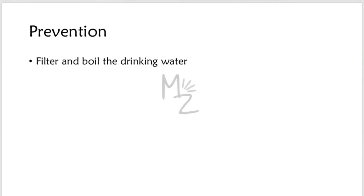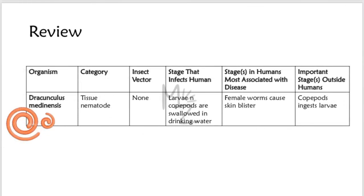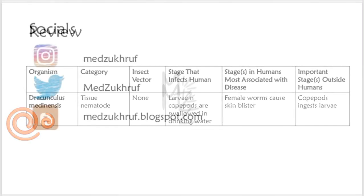Prevention consists of filtering or boiling drinking water. To review: the organism is Dracunculus medinensis, common name Guinea fire worm, responsible for causing dracunculosis. Mode of transmission is ingestion of copepods — small crustaceans — in drinking water. Definitive hosts are human beings; intermediate hosts are copepods. Endemic areas are tropical Africa and Asia. Primary location is the cutaneous tissue. Diagnosis is mainly clinical; treatment is gradual extraction of the worm. Category is tissue nematode with no insect vector. The infective stage is L3 larvae in copepods swallowed in drinking water. The stage most associated with disease is female worms causing skin blisters. An important stage outside humans is the copepods that ingest the larvae.